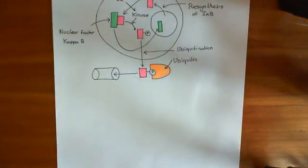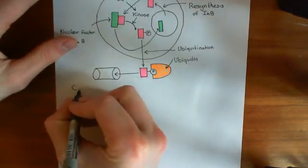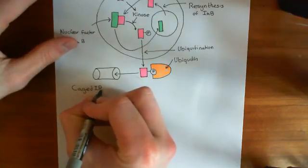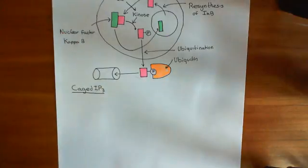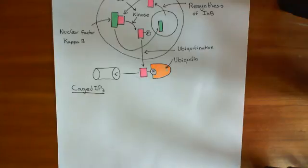Firstly, let me tell you how you can deliver a certain number of calcium ions to the cytoplasm of a cell. Basically, the way you do it is you use caged IP3. So let me tell you what caged IP3 is. Caged IP3 is a molecule that is not active, but if you shine UV on that molecule, it will uncage and release an IP3 molecule which is active.